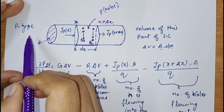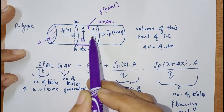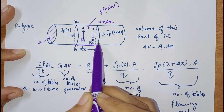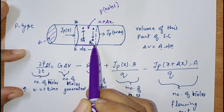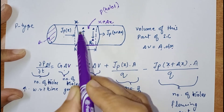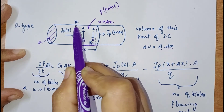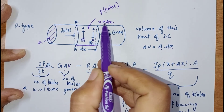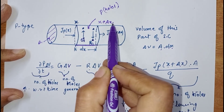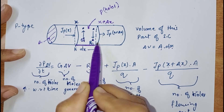Let us take a P-type semiconductor. In this semiconductor, we will consider only this particular slice of the semiconductor bar — from point x to point x plus Δx. This is the length of this particular slice.